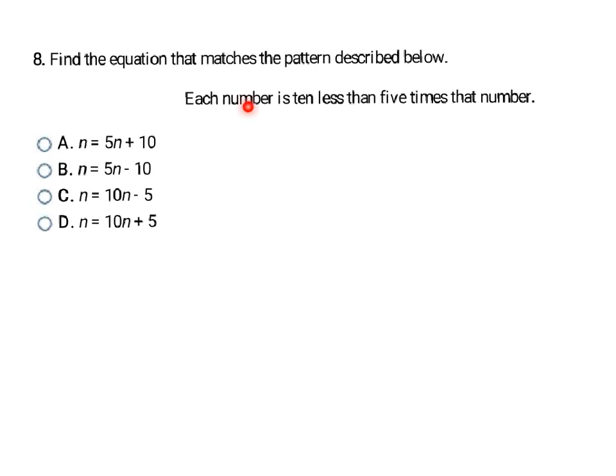And then this last one is we're translating from a sentence that describes the pattern into an equation. So it says here each number, and we're going to use n to represent some number we don't know, is, and is always means an equal sign, and then 10 less than 5 times that number. Now remember, whenever you see a less than, that means when you write the equation you're going to flip. Whatever is first in the words is going to be after your subtraction sign. And whatever is after your words is going to be in front of the subtraction sign. So I'm going to have a minus 10 and then 5 times that number. So 5 times that mystery number n is going to go in the beginning. I'm going to remember to flip it. So that means choice B is going to be my final answer.